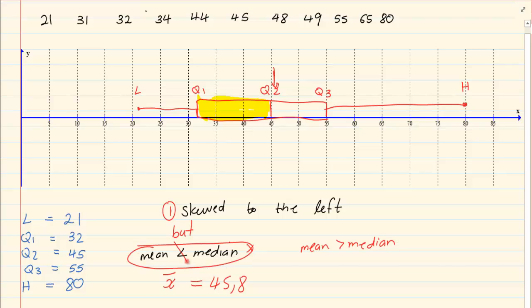The mean is actually greater than the median. So, what happens is, you can say, therefore, it is actually skewed to the right.